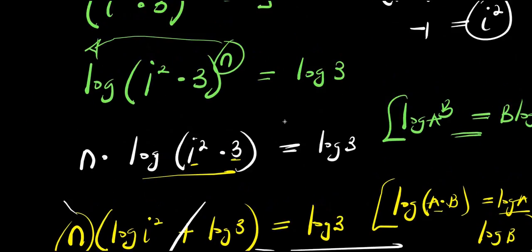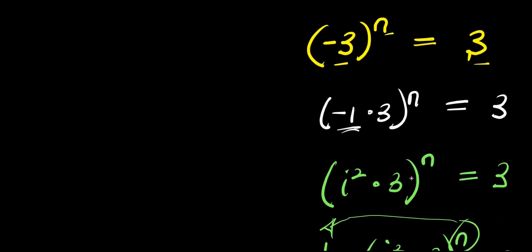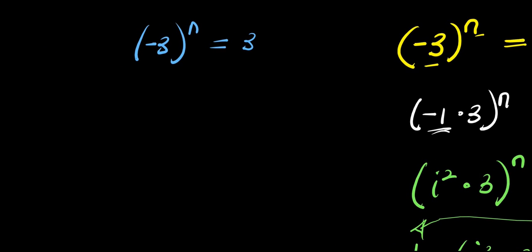Now the next thing is for us to consider the second method. In this other method, we are going to simply recall the problem: we have negative 3 to the power of n, and this equals 3. This second method is very similar to the first but a bit different. We can express negative 3 as negative 1 times 3, raised to the power of n, and this equals 3.